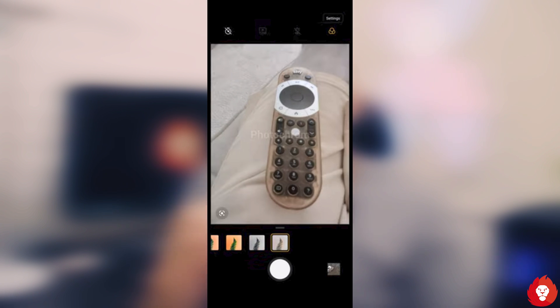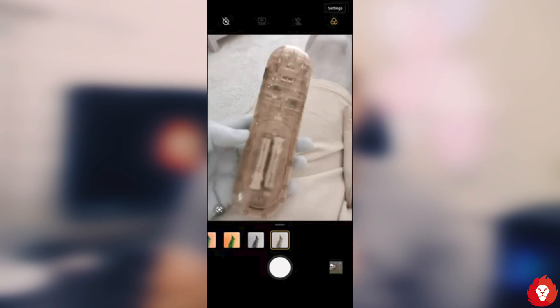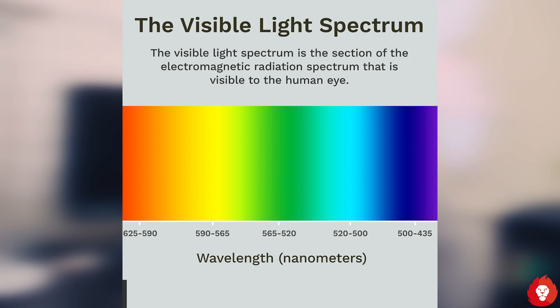Before we get into the specifics of how the OnePlus 8 Pro is able to capture transparent objects when they're actually black or opaque, we need to first discuss how light works and how the human eye perceives light. Typical light, often termed visible light, is something the human eye can see, ranging from 380 nanometers to 720 nanometers. Just because humans can see light in that range does not mean other forms of light don't exist — it's simply that we cannot perceive or detect them with our eyes.